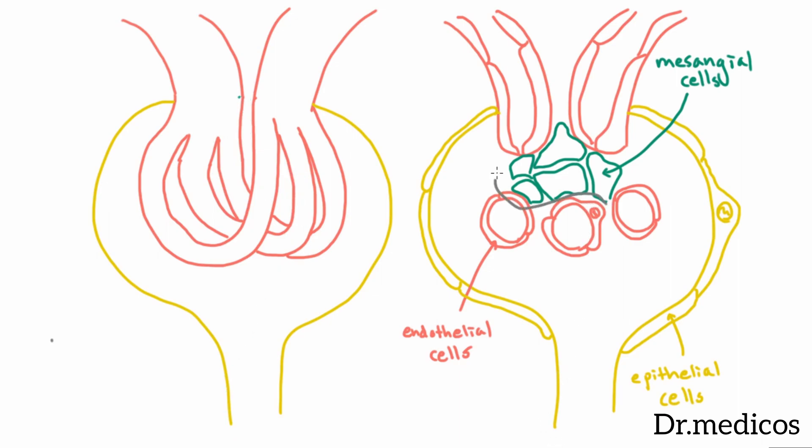And we should mention that this area here that the mesangial cells live in, this area that kind of glues together the capillaries, has a name, and that'll be somewhat easy to remember. It's called the mesangium. And I'm saying easy to remember because of course it's like mesangial.